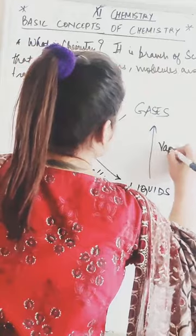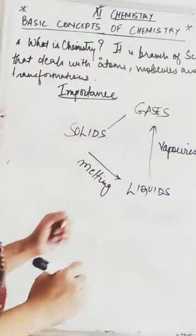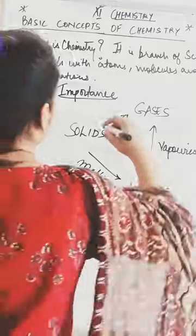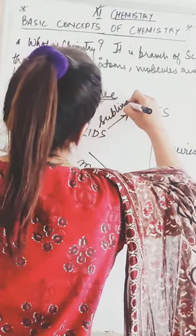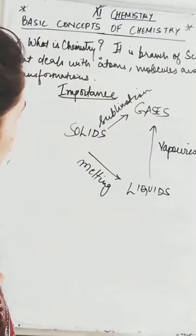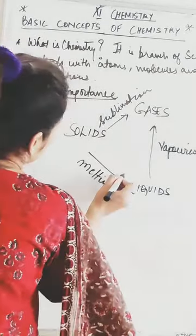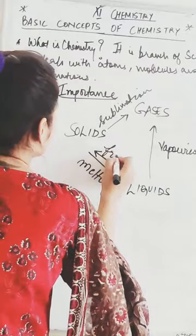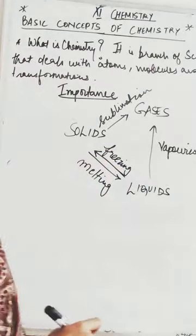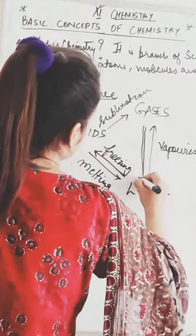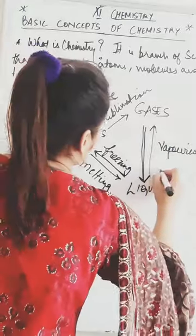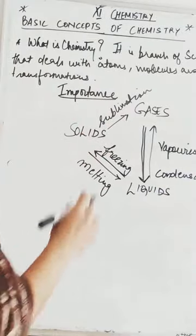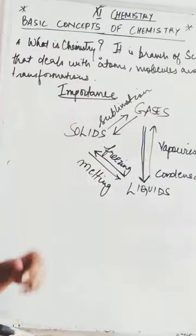The process of liquid converting to gas will be known as vaporization. And when gases change to solid directly, it will be known as sublimation. These are the names of these processes. One interesting thing to note is that these processes can also be vice versa. If I want to convert liquid to solid, it is known as freezing. If I want to convert gas to liquid, it is known as condensation. And if I want to convert gas to solid, it is also known as sublimation.